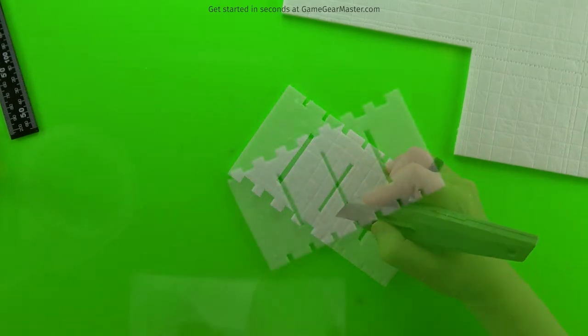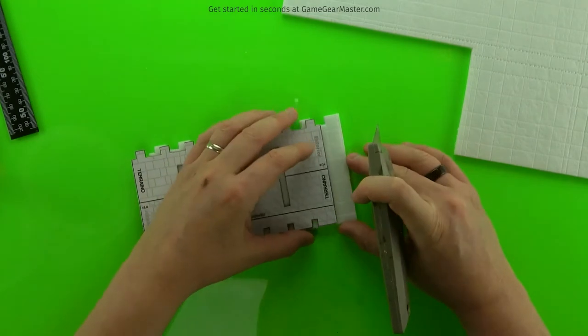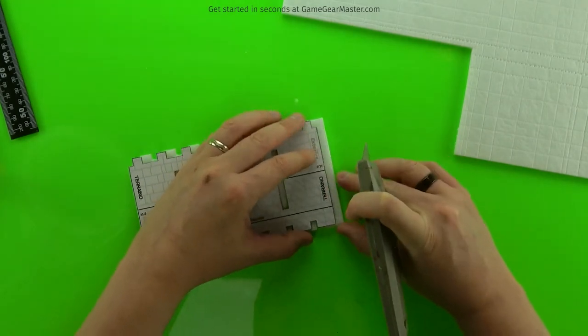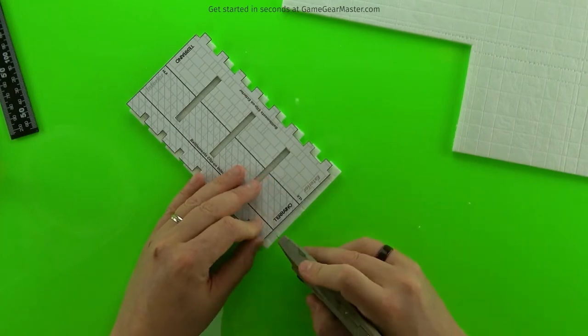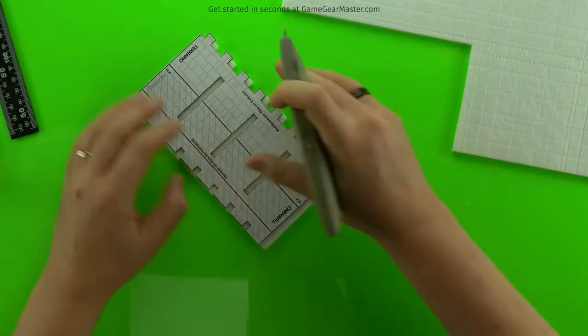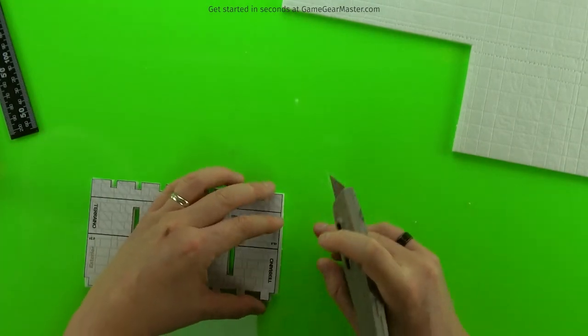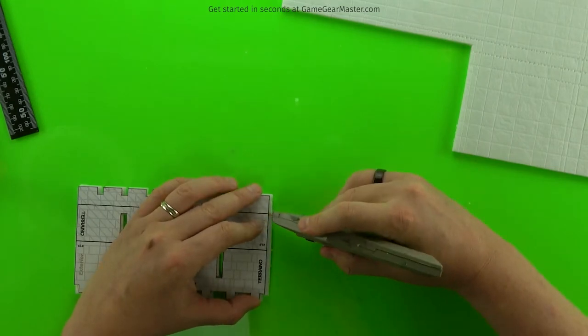You'll notice that there are these black horizontal lines on the template. That denotes where the three separate components of the crenellation are to be cut out from each other. So just mark your foam and then cut out those three different components.